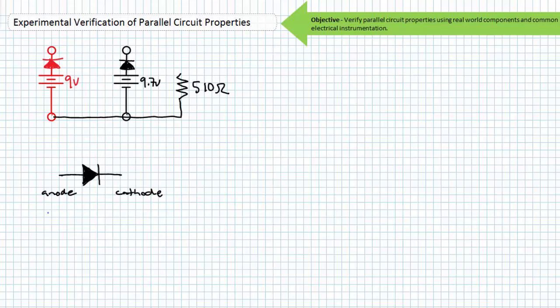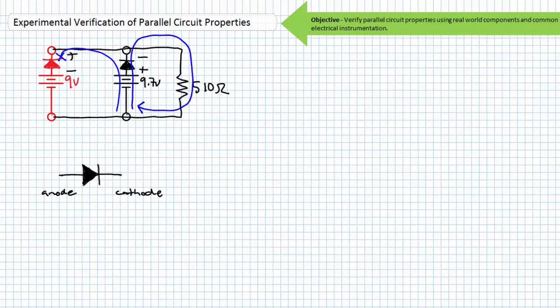Consider what would happen if diodes were placed on each source in the following configuration. If the source on the right was ever so slightly higher than the source on the left, the diode on the right would allow current to leave it and travel through the intended electrical load only. The simple electrical check valve prevents the discharge of the higher-voltage source into the lower-voltage source. The drawback is that the diode servicing the lower-voltage source contributes nothing more to this parallel combination than the sixth member of an away team on Star Trek — whose only purpose was to meet an early, often horrible fate at the hands of some unseen alien menace.